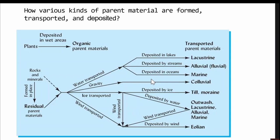If it's ice-transported, we call it till and moraine. If deposited by water from ice, you have outwash, lacustrine, alluvial, and marine. When glaciers push soil around, they form small features like small hills. Lakes can also form in glacial landscapes, and when those lakes break, they deposit water further below — so material transported from ice formations but deposited by water comes back to familiar water-deposited features.